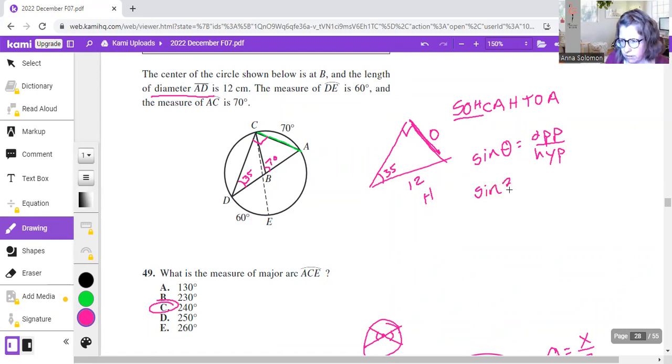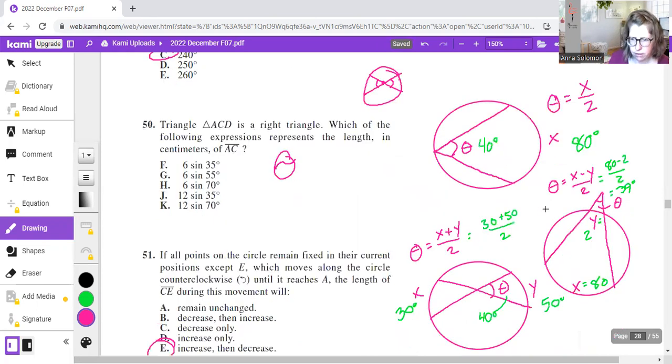So we have sine of 35 equals 12. Nope. See, you see what I was about to do there. The opposite is X, not 12. And the hypotenuse is 12. And then if we're solving for X, we're just going to multiply both sides by 12. So we got 12 sine 35. Let's remember 12 sine 35, 12 sine 35. There you are. And so we have answer J.